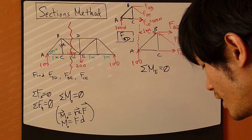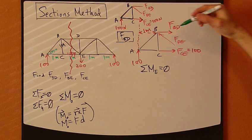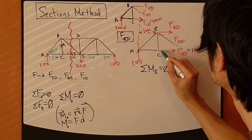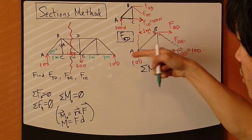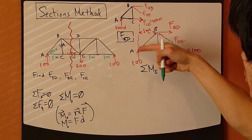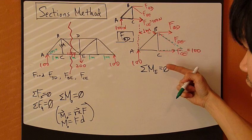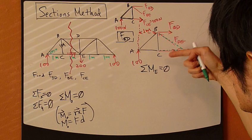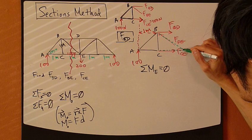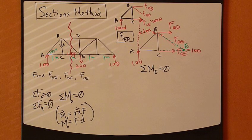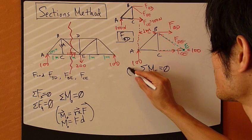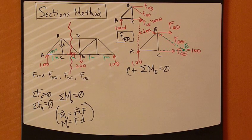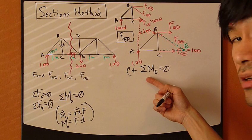Sum of moments about joint E equals zero. Define positive direction — I'll use clockwise positive again. Expanding just like before: the 100 Newton force times its shortest distance from joint E. Joint E is two meters from the line of action of the 100 Newton force, so the first term is 100 times 2 meters, positive.